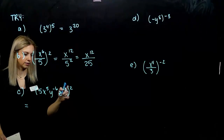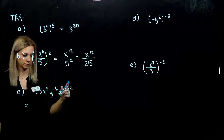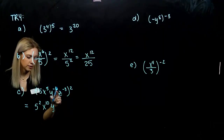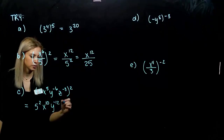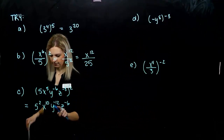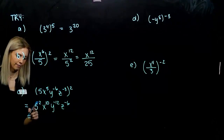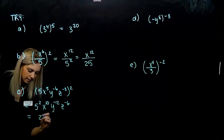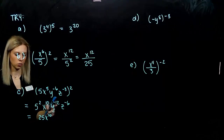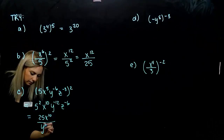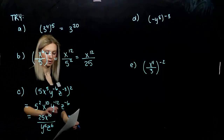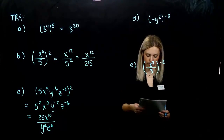For part c, distribute to every single term of the product. We have 5 squared, then raise each power to a power by multiplying. But it's not fully simplified because there are still negative exponents. 5 squared is 25. x to the 10th stays where it is — positive power. But y to the negative 12 needs to move downstairs, and z to the negative 6 also moves downstairs. All positive powers — simplified, done.